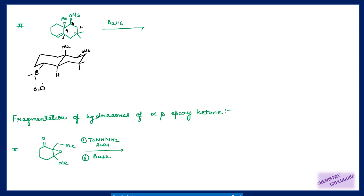When a base is used, it attacks on the boron, this bond shifts here, this shifts here, and the mesylate is removed — fragmentation of this bond occurs. The carbon-leaving group bond and this bond are anti-periplanar, so they break easily. I get a new double bond at this position, and this alkene is E in nature because one bond goes downward and the other upward. So I will get an E-alkene in this case.